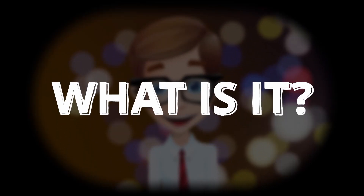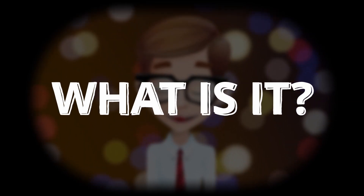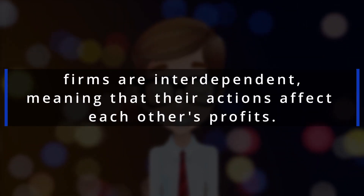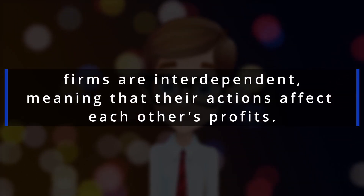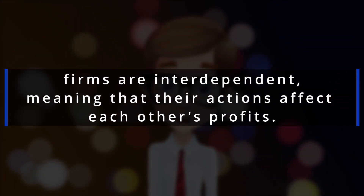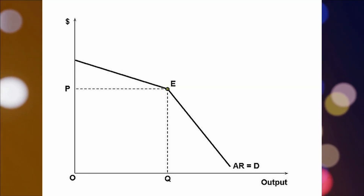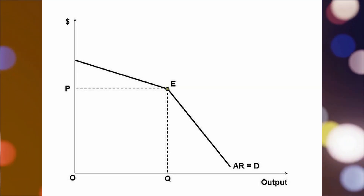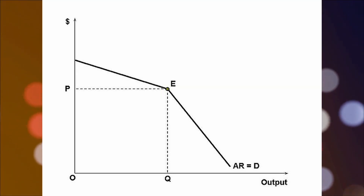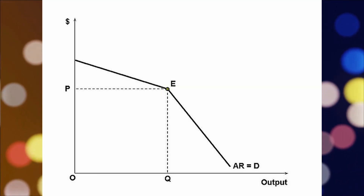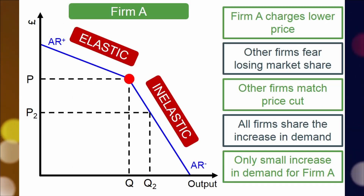So what exactly is the oligopoly kinked demand model? In an oligopoly, firms are interdependent, meaning that their actions affect each other's profits. The kinked demand model assumes that firms face a kinked demand curve, which is shaped like a V.